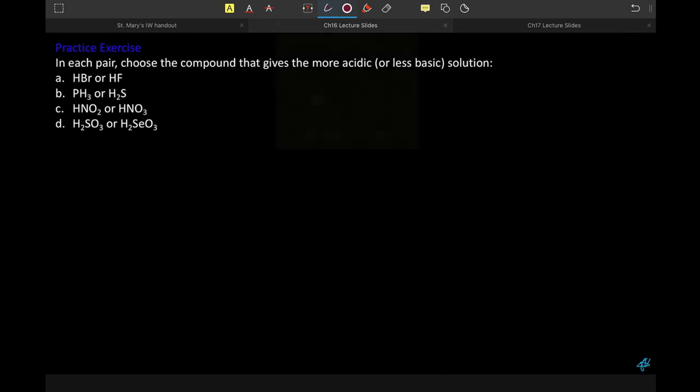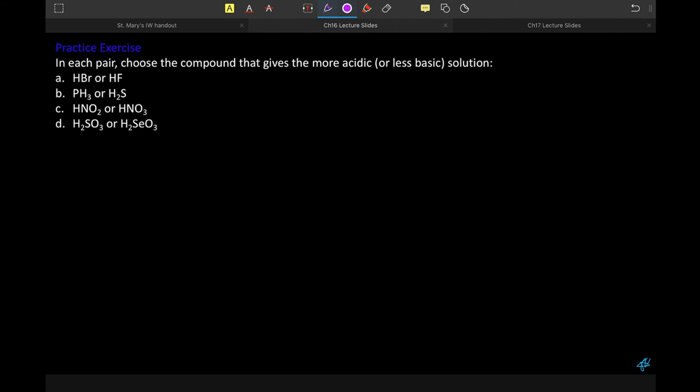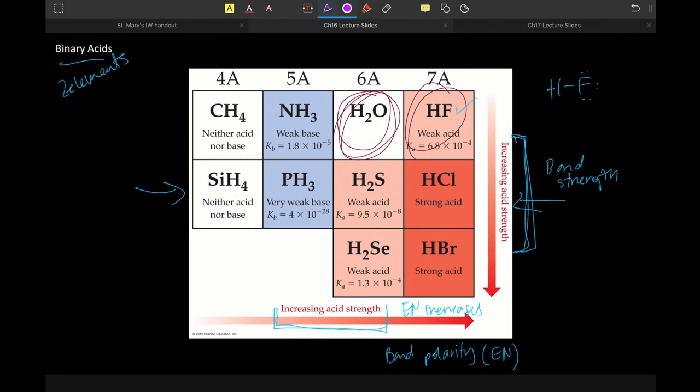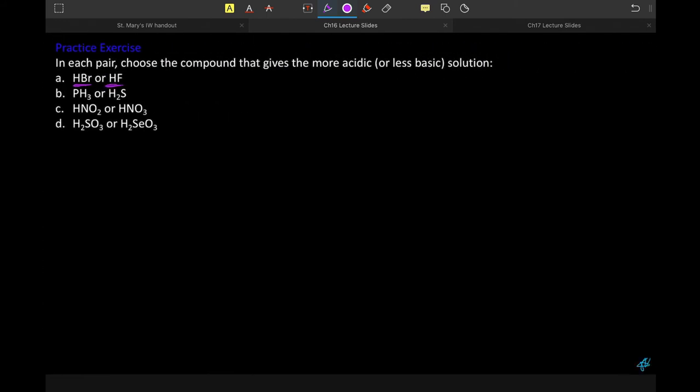So if we were tasked with determining which is the most acidic given a series, we would look at those things. If we're looking at HBr versus HF, bromine and fluorine are in the same group, so we would be looking at bond strength, as we said over here. HF has a stronger bond than HBr. Looking for more acidic, so the one that will more readily lose its proton is HBr.